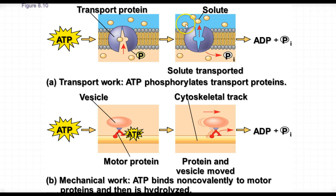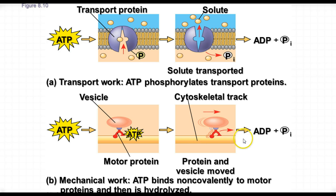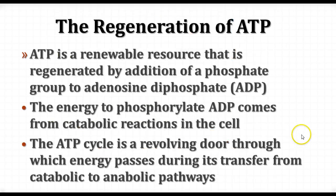When that's finished — when our solute molecules have moved — the inorganic phosphate is released and the molecule goes back to its original state, and we have ADP and inorganic phosphate. Here's a vesicle in the cell — one of those walking vesicles moving on a motor protein. By adding the phosphate from the ATP to the motor protein, that causes it to move along the microtubule and move the vesicle along, releasing ADP and inorganic phosphate.